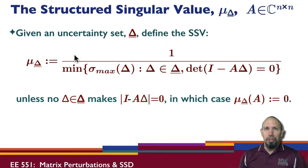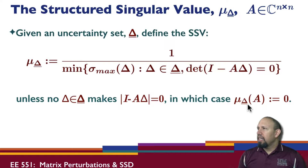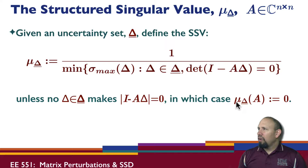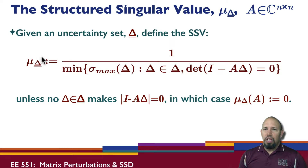Most of us feel confused when we see this for the first time, so you're not alone. That's the definition. Unless there is no delta in the uncertainty set that makes this determinant zero, in which case — using ':=' meaning 'defined to be' — the structured singular value is defined to be zero. So this is our structured uncertainty and it is a function of the matrix A and of our uncertainty set.